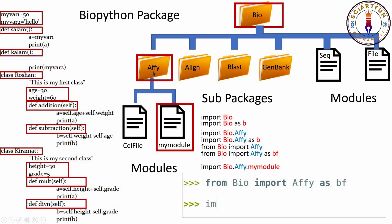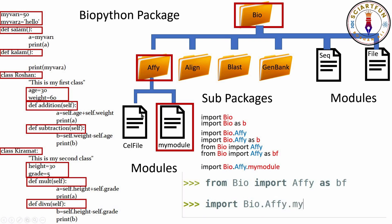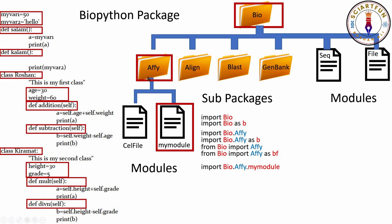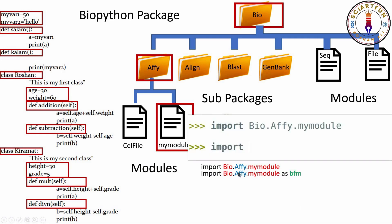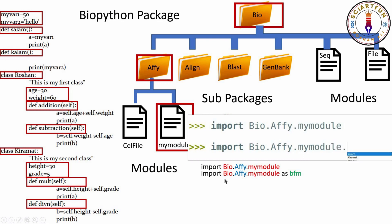To import my_module, use 'import Bio.Align.my_module'. If you use this method, whenever you want to use this module you will have to type that whole path each time: Bio.Align.my_module. A better method is to rename it: 'import Bio.Align.my_module as bfm'. Then you only type bfm whenever you want to use any variables, functions, or classes inside my_module.